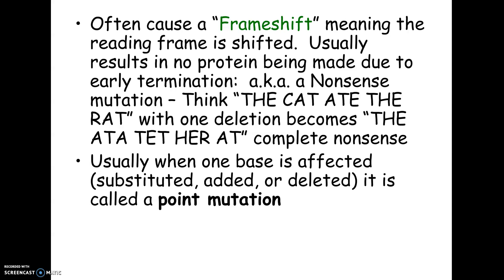Both substitution and insertion/deletion are called point mutations because we're changing just a single point in the DNA code — unlike a chromosomal mutation where a whole section of a chromosome is inserted, deleted, duplicated, or translocated. Remember, you have 20,000 genes on a chromosome. If you change one letter, you're messing up one gene out of 20,000. But if you're missing a whole section of a chromosome, you might be missing a hundred genes, which may be a much bigger problem than one messed-up gene.